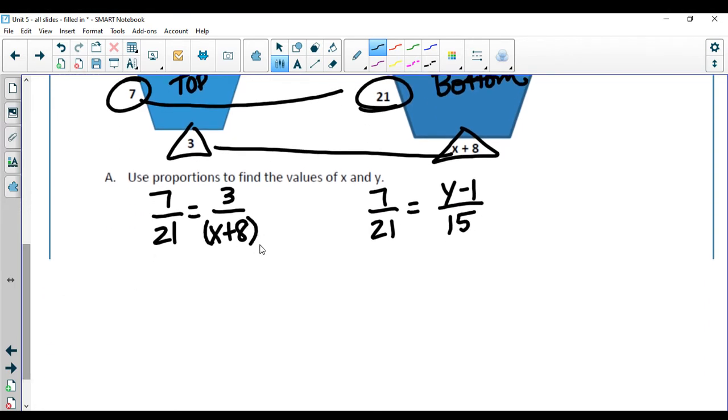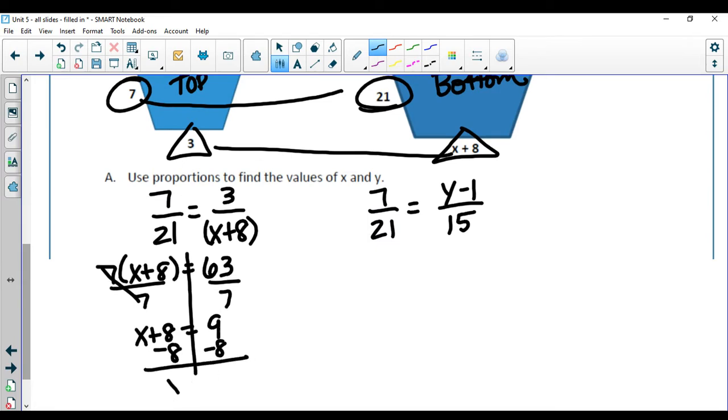I'm going to put my expression in parentheses, so I have 7 times parentheses x plus 8, and 3 times 21 is 63. Since this is a plain number, I can divide by 7 to get x plus 8 equals 9. Subtract 8 on both sides, and I'll get x equals 1.